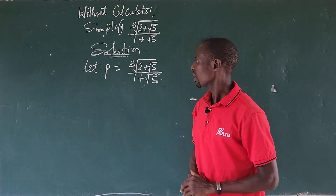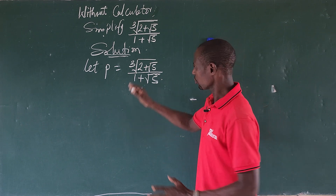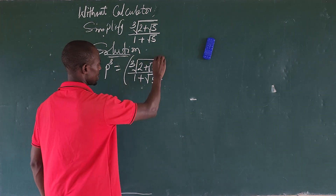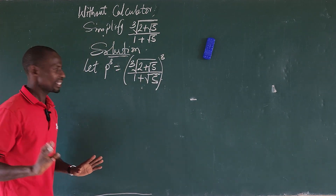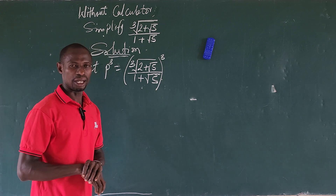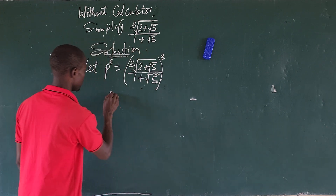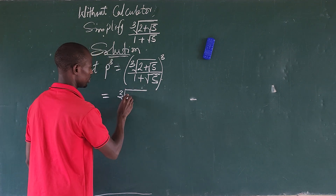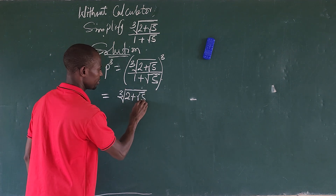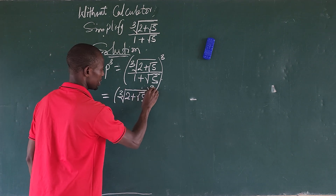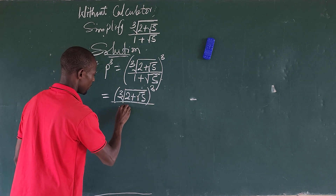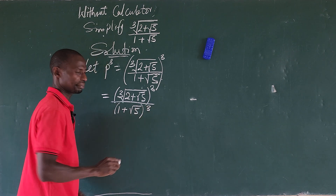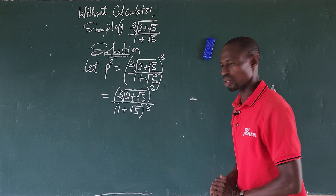Because we have a cube root, we want to take the cube of both sides of the equation. According to the law of surds, we can rewrite this: p³ equals the cube root of (2 + √5) raised to the power of 3, all over (1 + √5) raised to the power of 3.